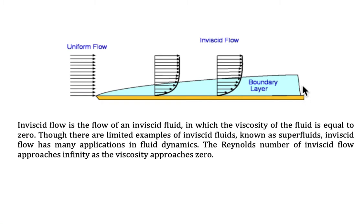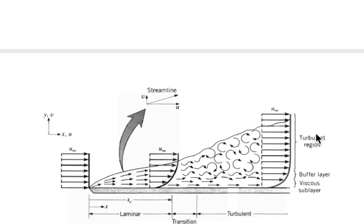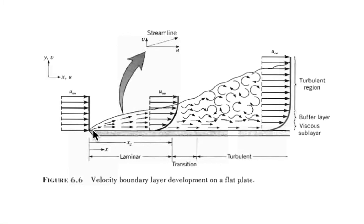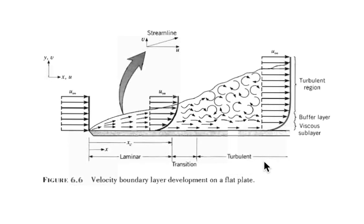Because the boundary layer is an existing layer, we can measure it — we can measure its thickness. Now, this is also the formation of the boundary layer. If the velocity inside the boundary layer flows in a certain pattern, we call it a laminar boundary layer. However, after a certain distance, the velocity inside the boundary layer can become turbulent, and at that point we call it a turbulent boundary layer.